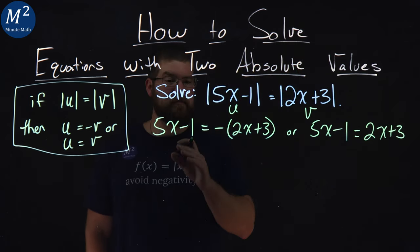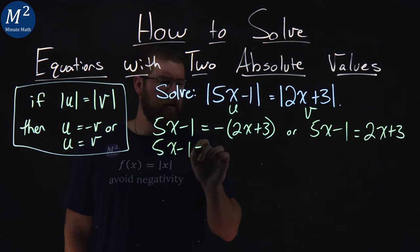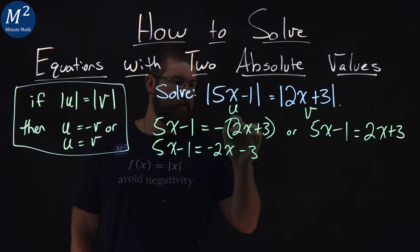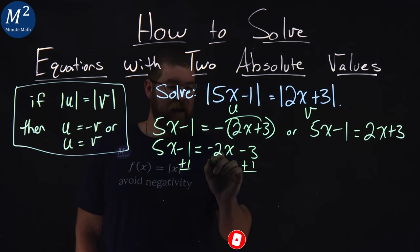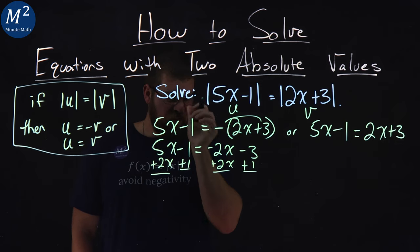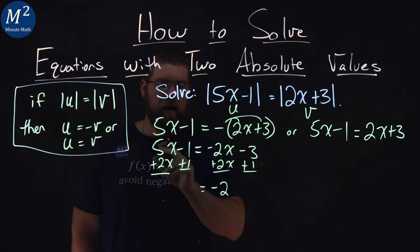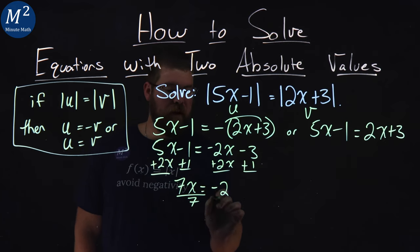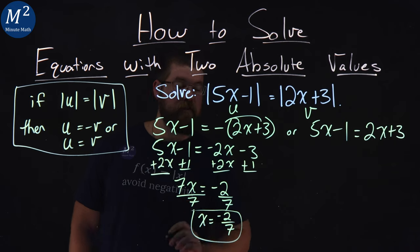Now we solve each one individually. Starting on the left: 5x minus 1 equals negative 2x minus 3, distributing the negative sign. Combining like terms, I add 1 to both sides and add 2x to both sides. Negative 3 plus 1 is negative 2, and 5x plus 2x is 7x. Dividing both sides by 7, x equals negative 2 sevenths. That's our first answer.